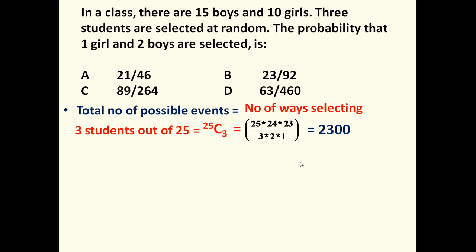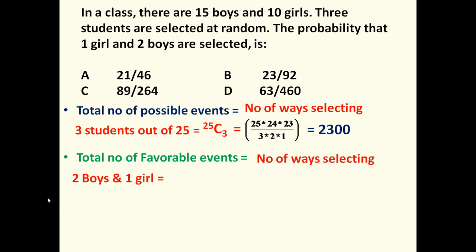There is a condition: out of these 3 students, 1 girl and 2 boys must be there. So the total number of favorable events equals the number of ways of selecting 2 boys and 1 girl. We have to select 2 boys out of 15 boys and 1 girl from 10 girls. So that is 15C2 multiplied by 10C1.